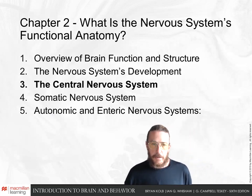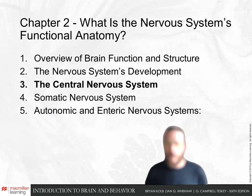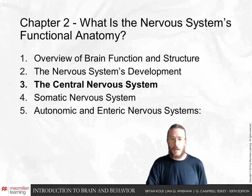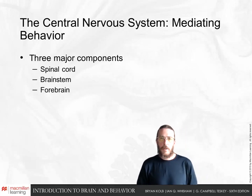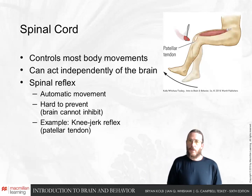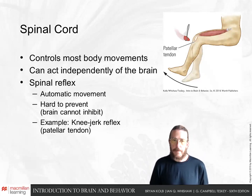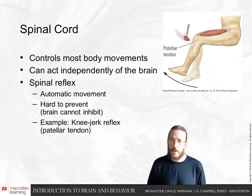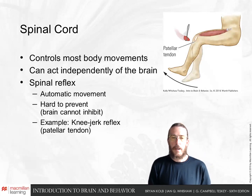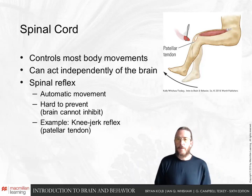Now we'll go into detail about the central nervous system and its parts — this will be a general overview, with more detail in subsequent chapters. The central nervous system has three major components: spinal cord, brain stem, and forebrain. The spinal cord controls our body's movements and can act independently of the brain. For instance, a spinal reflex — like tapping below the kneecap with a rubber mallet causing the quadricep to tighten and the leg to swing out — involves just the spinal cord and not the rest of the brain.